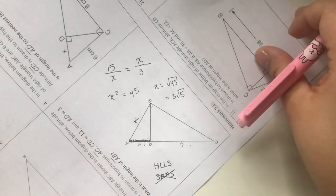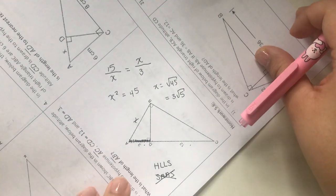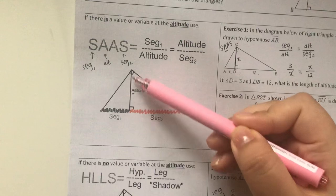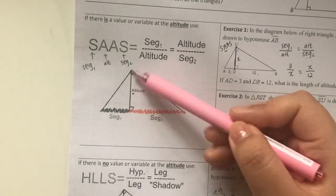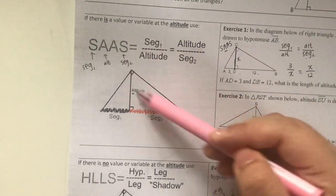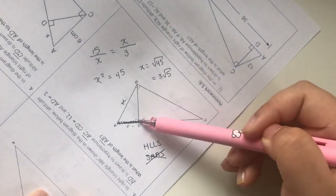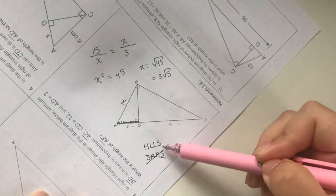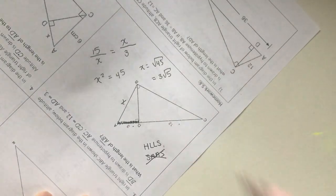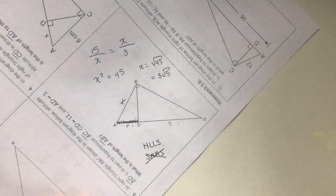Those are the only three problems I'm going to go over today. Key points: when we're looking for the altitude or we need to use the altitude, I need to use SAAS because of the A for altitude. If I do not need the altitude, I don't need to find it, it's not given, I need to use HLLS.